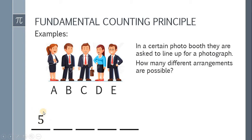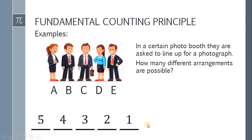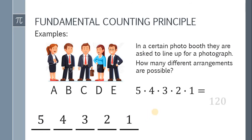Since one person is now placed in the first position, the options for the second position are reduced to 4. With two people placed, the third position has only 3 options. The fourth position has 2 options, and the last position has only 1 person remaining. According to the fundamental counting principle, there are 5 times 4 times 3 times 2 times 1, which is 120. Therefore, 120 different arrangements are possible for the photograph.